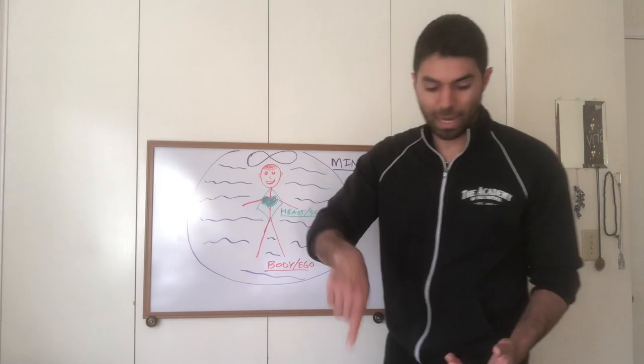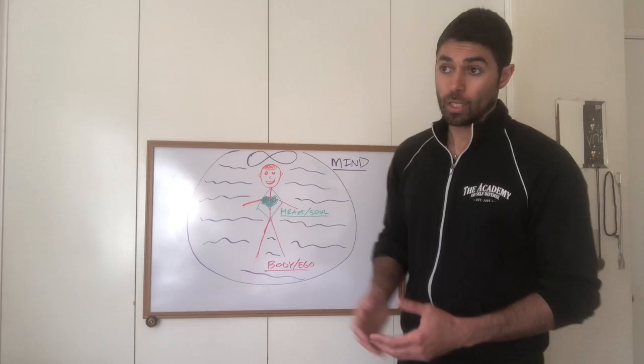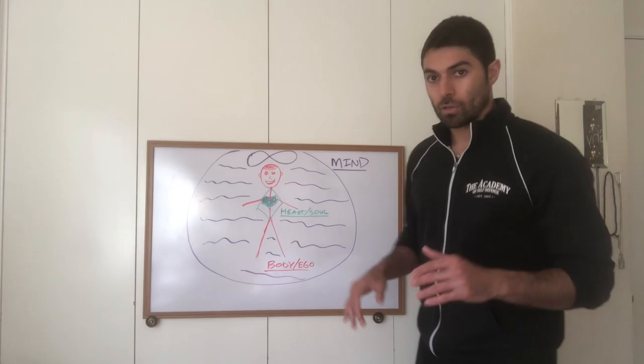This has us going in this spiraling game, this rat race of trying to get something, be something, do something, in order to have this state that we desire. So there comes desires with body and ego.